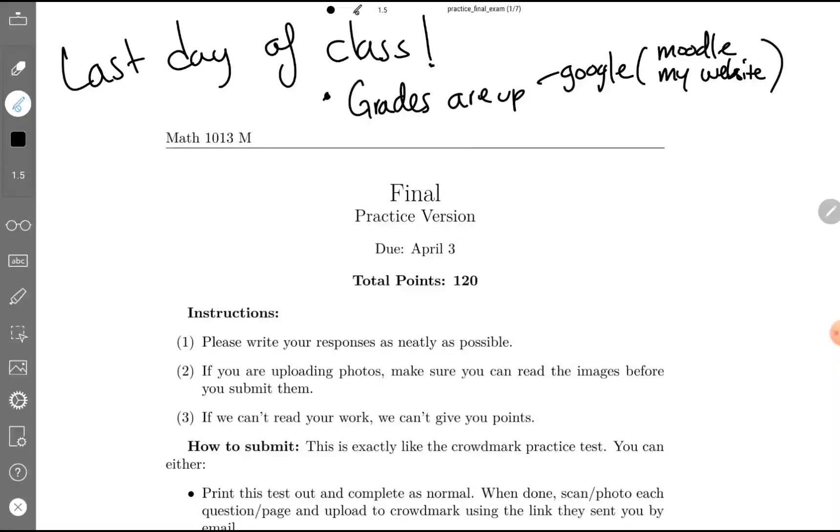Grades are up. You can find them on Google, accessible through either Moodle or my website. There should be six forms, so everyone can look at it one at a time. Remember to remove your student ID afterward. If you have questions, feel free to ask. For midterm regrading, note that I'm a harsh marker, probably harsher than the TAs. If you want me to re-look at something, be 100% sure you earned those points, or your score might go down.